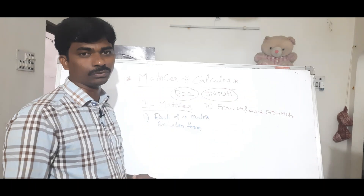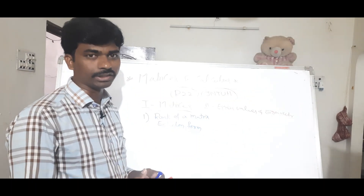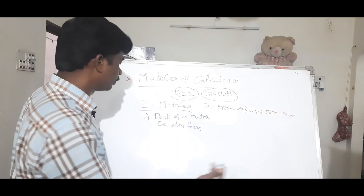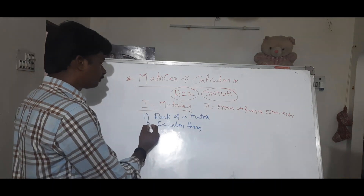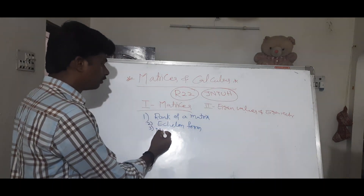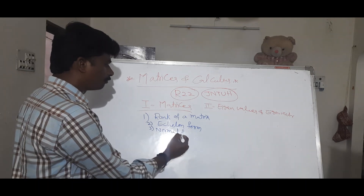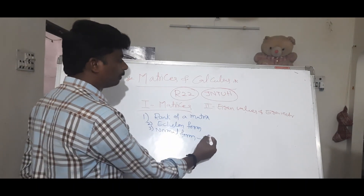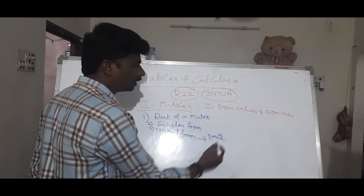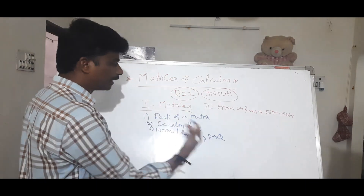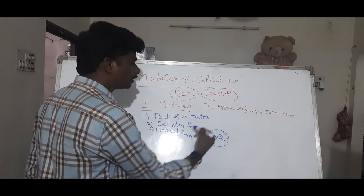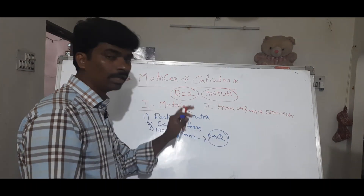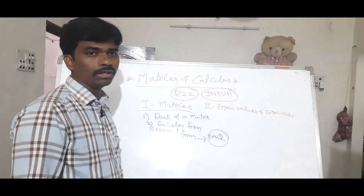We discuss the k value and how to find it. Next is normal form. In normal form, we automatically use PAQ. PAQ is the non-singular form. You can choose to use PAQ non-singular form systematically.